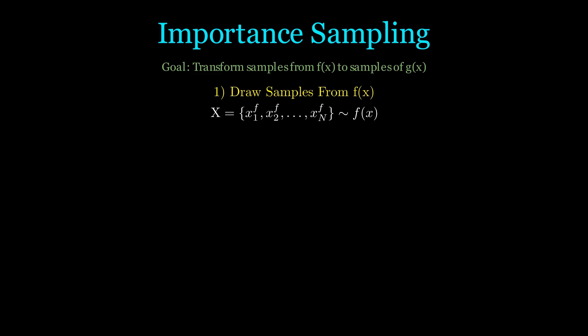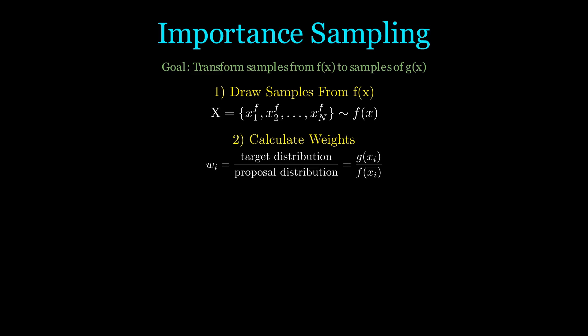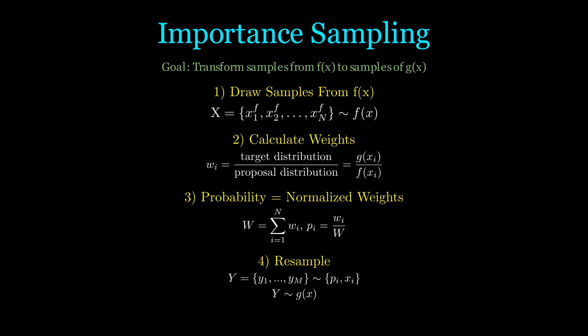I have a rigorous tutorial on importance sampling, and I would highly recommend watching that, but here is a recap of the main steps. We first draw samples from a distribution f of x, and we want to transform these samples such that they represent g of x. To do this, we calculate the importance weight of each particle, then we normalize to make it a valid probability distribution, and then resample. The reason we resample is to avoid carrying around a weight associated with each particle. By doing resampling, we can say that the set of particles represent g of x.